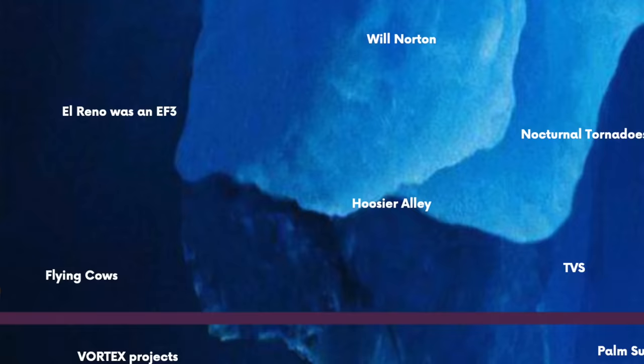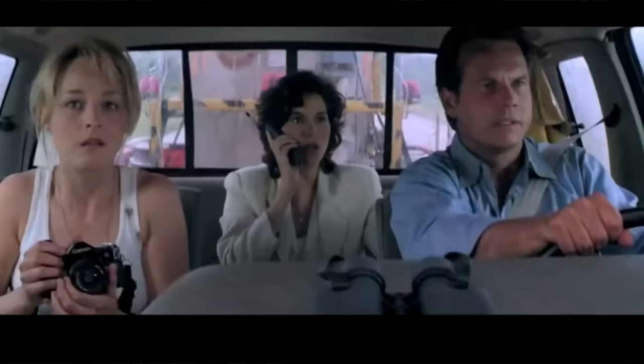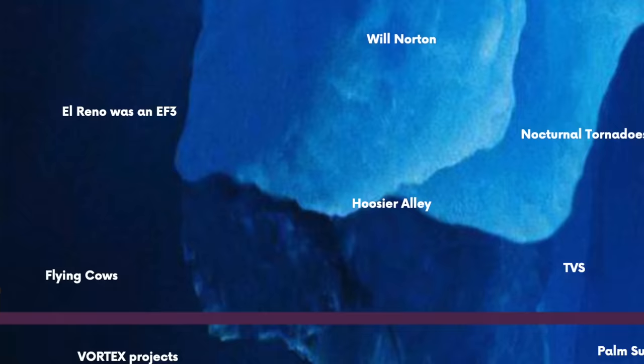Flying cows refers to the famous tornado trope of cows being picked up and thrown by tornadoes, mostly because people associate farms and tornadoes due to their frequent appearance in the U.S. Plains.